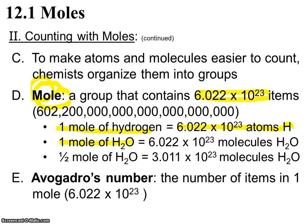So what this means is one mole of hydrogen atoms is going to have 6.022 times 10 to the 23rd hydrogen atoms. One mole of water molecules is going to have 6.022 times 10 to the 23rd molecules of water. Only half of a mole would have half of that number or 3.011 times 10 to the 23rd molecules of water.